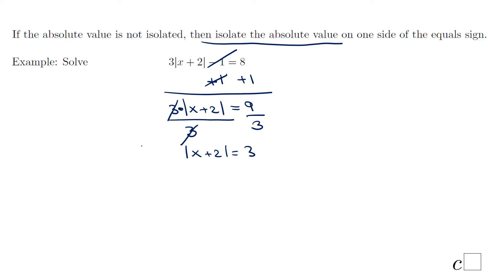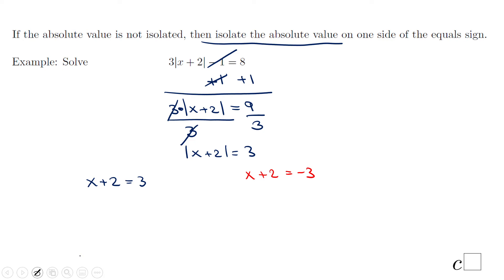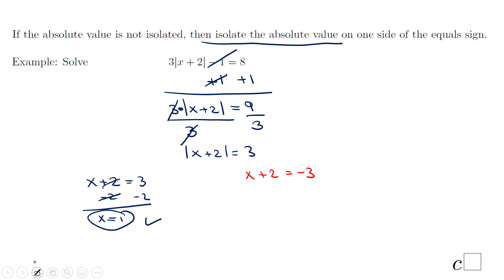Don't forget two equations: the first one is x plus 2 equals 3, and the second one is x plus 2 equals negative 3 — the positive and negative values on the right side. For the first equation, subtract 2 and we have x equals 1. You may want to go back and check it in the original equation: 1 plus 2 is 3, absolute value of 3 is 3, 3 times 3 is 9, 9 minus 1 is 8 — so that works fine.